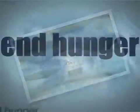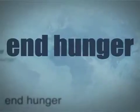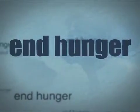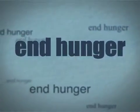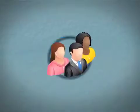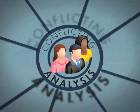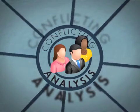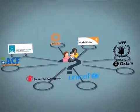To sustainably end hunger with the right interventions and policies, it is essential to have a clear, reliable and commonly agreed picture of the food security situation. In reality, decision-makers are often provided with conflicting analysis of situations and recommendations by different agencies.